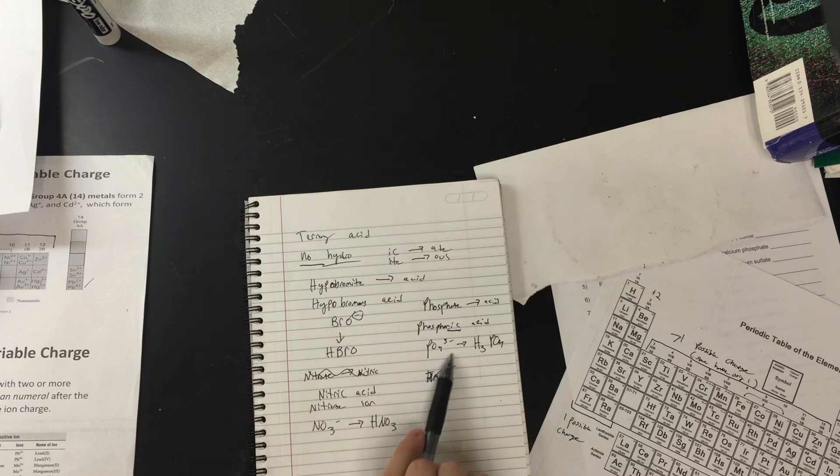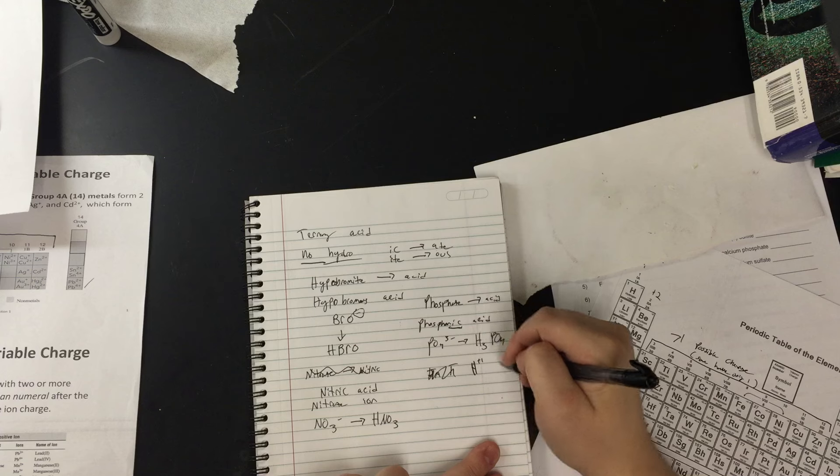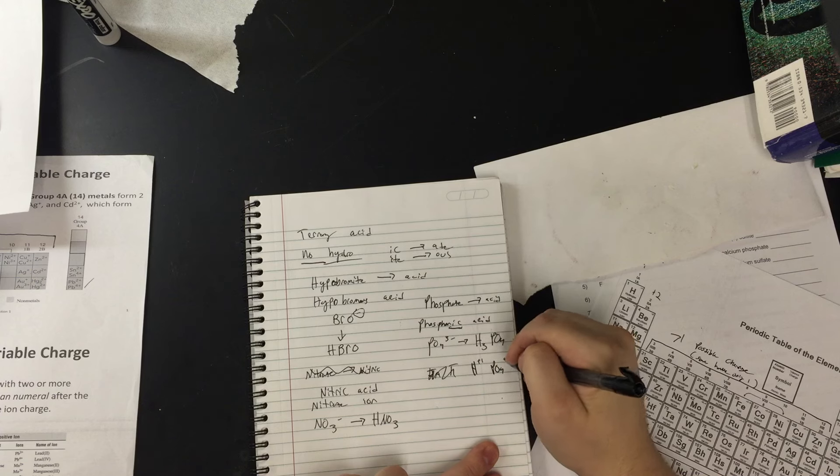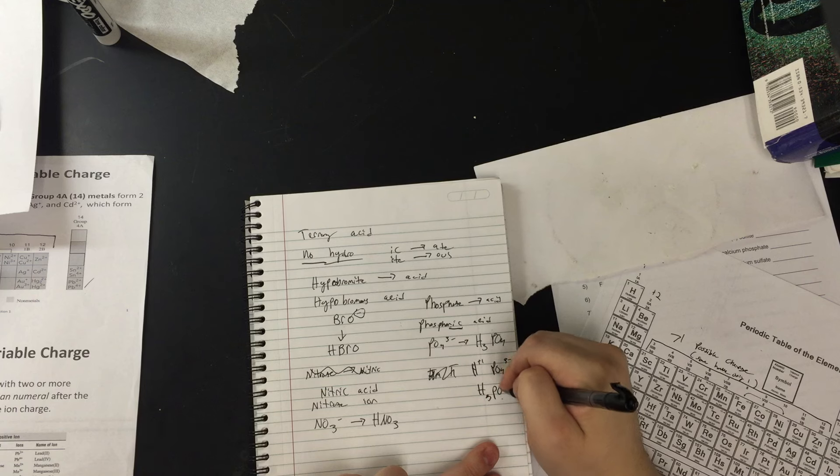We're going to think how many hydrogens are going to cancel this out. And obviously we're going to need 3 because each H has a plus 1. And we're going to need 3 plus 1s to cancel out this 3 minus. Or we can do H plus 1, PO4 3 minus, and cancel them out. H, switch them out, H3PO4.